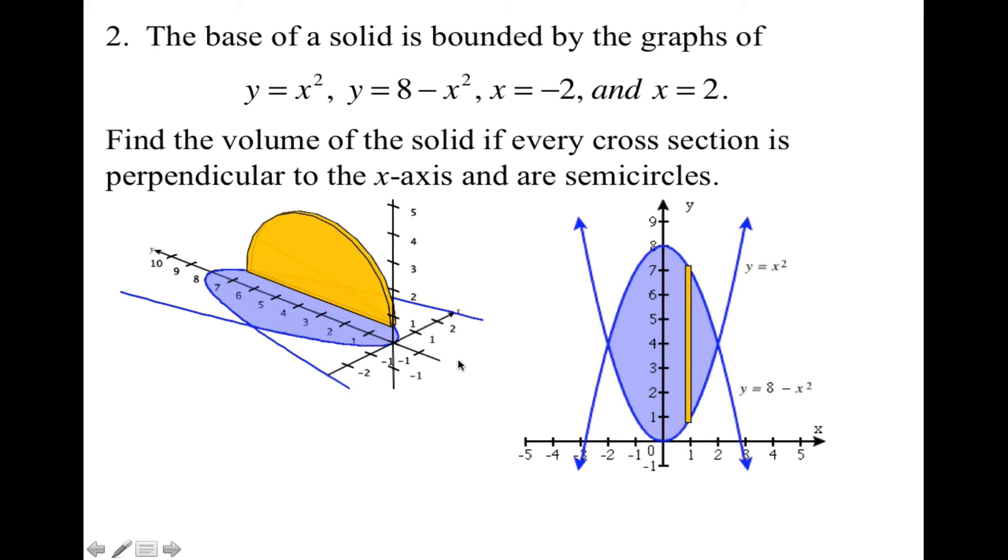Visually, that's what this is going to look like. You have your graph. Here's your base, right, bounded by the x squared and the 8 minus x squared. Since those two functions intersect at negative 2 to 2, that's where your limits are for your integration. Here is one cross section, a semicircle. We need the area of this semicircle. We know that the area of a semicircle is pi r squared divided by 2. When you look at this semicircle sitting between these two curves, you'll see that its diameter is represented by the height of the rectangle.